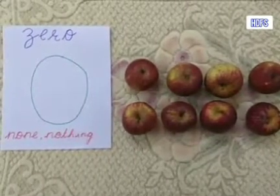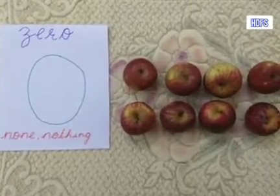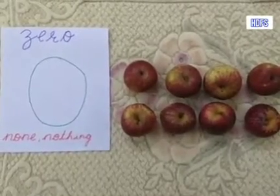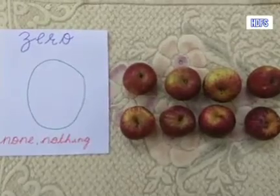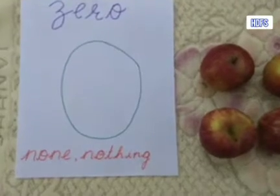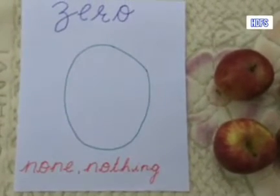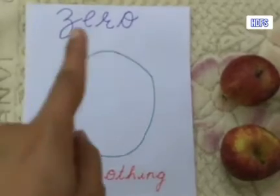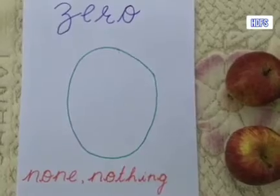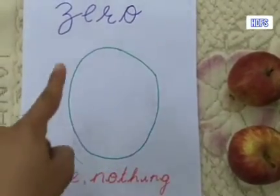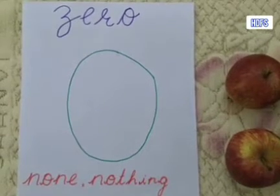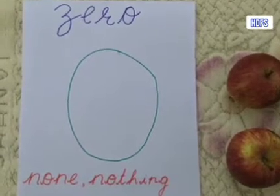Today's date is 17th of September, 2020, Thursday. In our numeracy class today, we are going to learn a new number. We are going to learn about zero. Have you heard of this number? Remember, this is a zero — you just make a simple round. That's called a zero. So we are going to learn the concept of zero today.